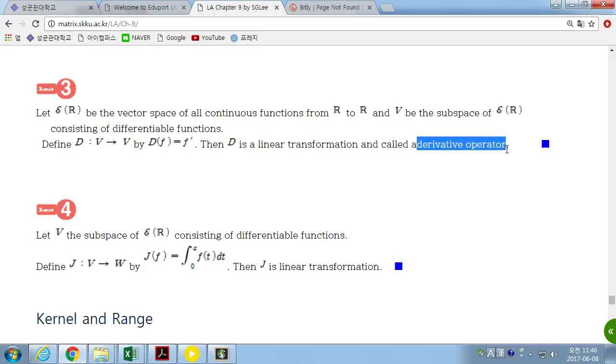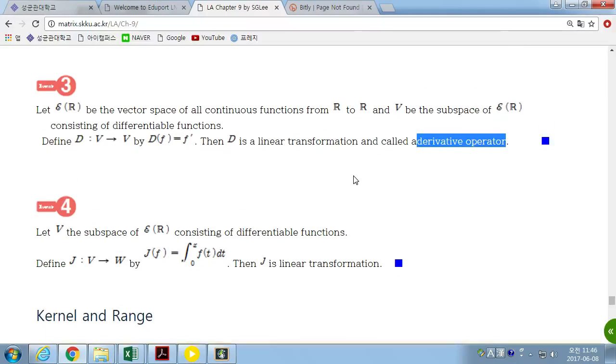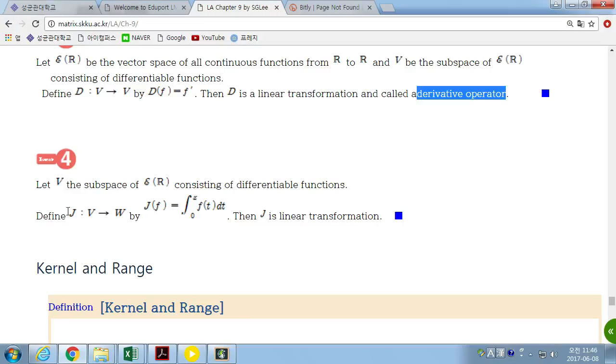Similarly, if we define J as an integral, like this. This also satisfies a condition to be a linear transformation. So, J is a linear transformation.